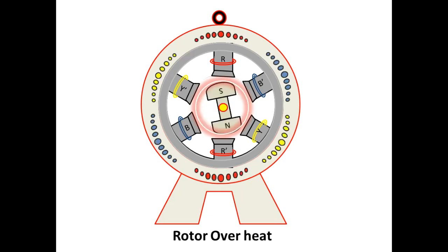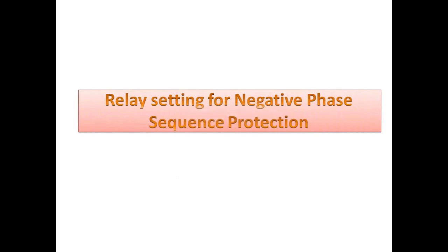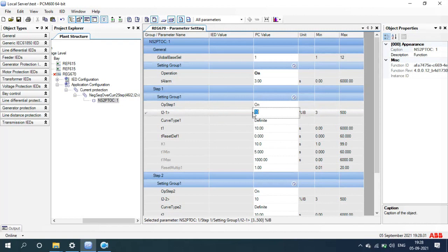Now we will go for relay settings on REG 670 relay. According to this relay it can be used by definite time and also by using curve basis. If we select definite time it's going to operate depending on the T1 time set and also the I2 current set.